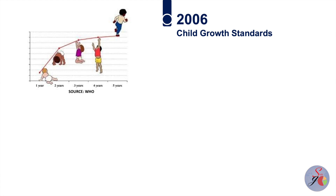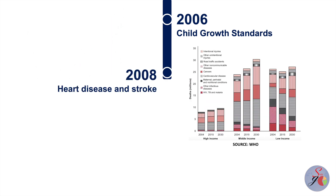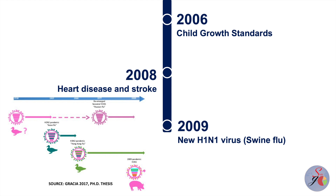These standards are unique tools that define malnutrition in children under 5 years of age and are used for child growth monitoring in most countries. In 2008, heart diseases and stroke emerged as the world's number one killers, indicating a global shift from infectious diseases to non-communicable diseases. WHO responded by launching several initiatives aimed at preventing and controlling these diseases. The world faced the first influenza pandemic since 1968 with the emergence of the new H1N1 influenza virus — Swine Flu — in 2009. WHO worked with collaborating centres and pharmaceutical industries to develop influenza vaccines in record time.